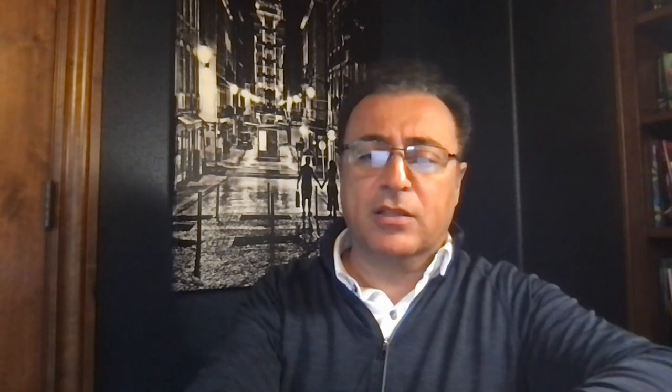To do pre-auth, at-auth, and post-authorization checking of identity, you first need a source of truth — knowing what group an identity belongs to and what privileges apply to them. We built a platform that integrates with all identity stores, from Azure to traditional AD to Oracle and any type of identity data store. Once you have that source of truth, you have the foundation.